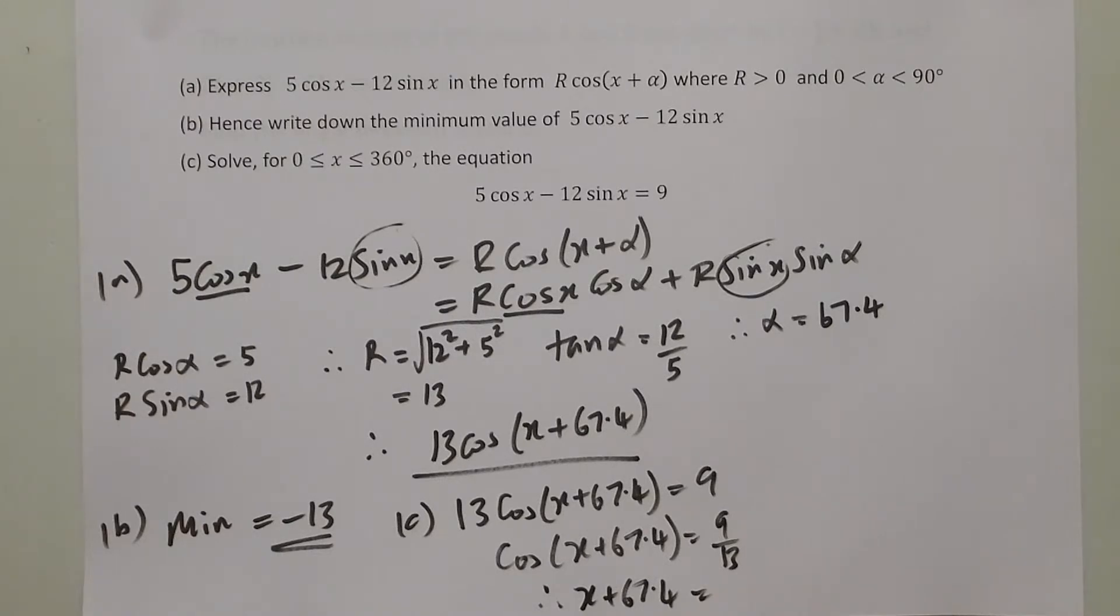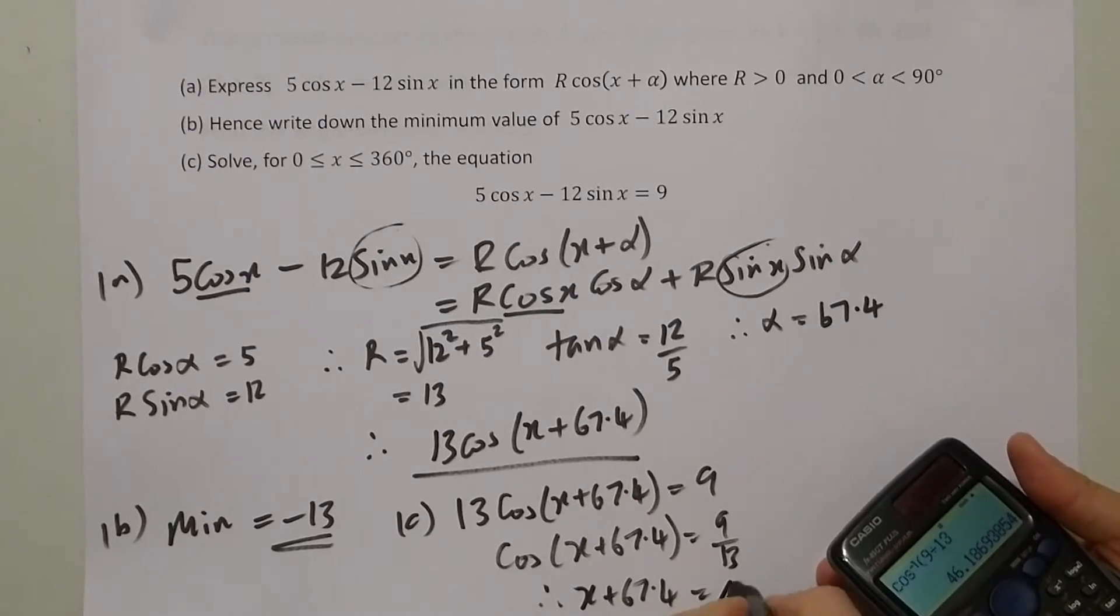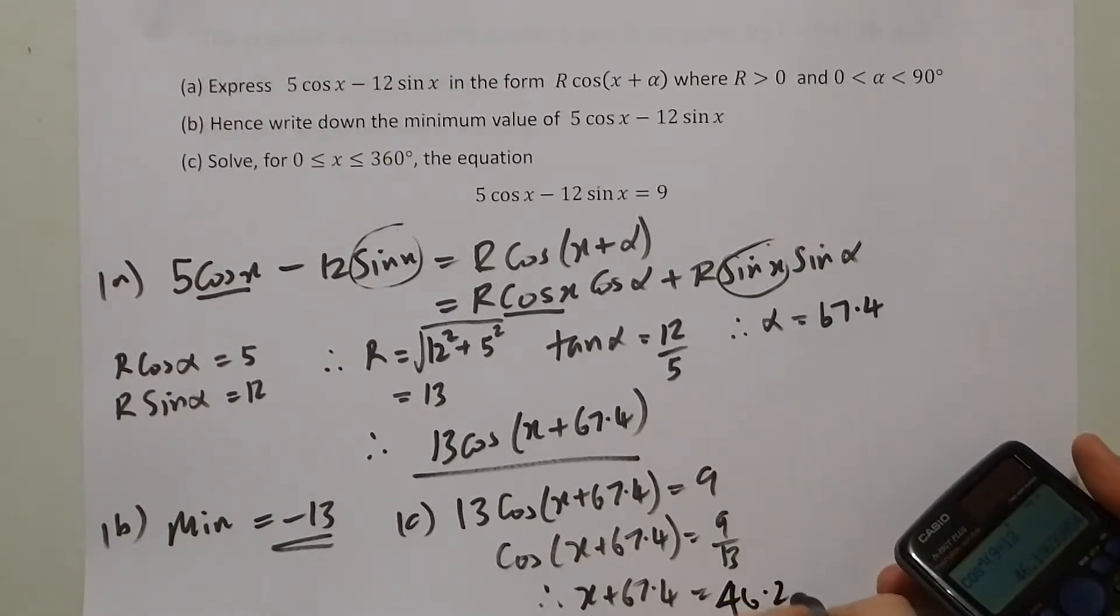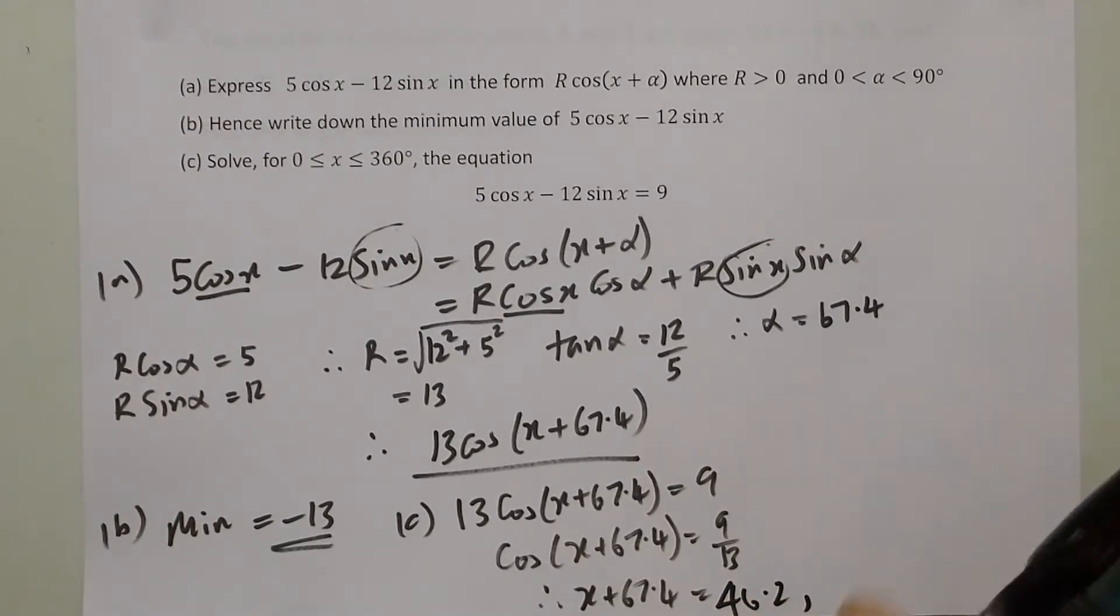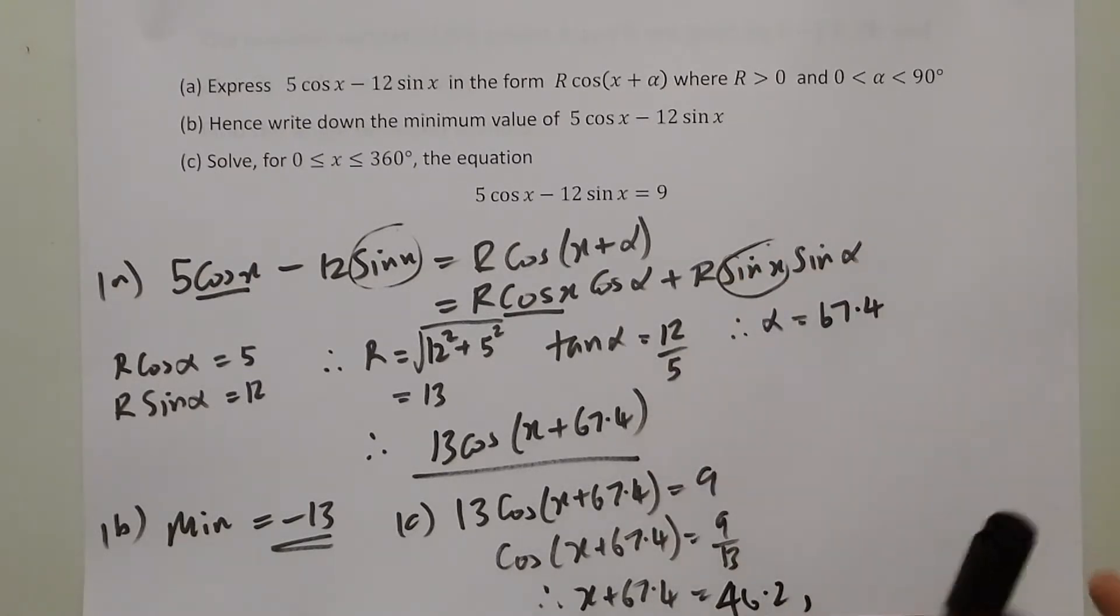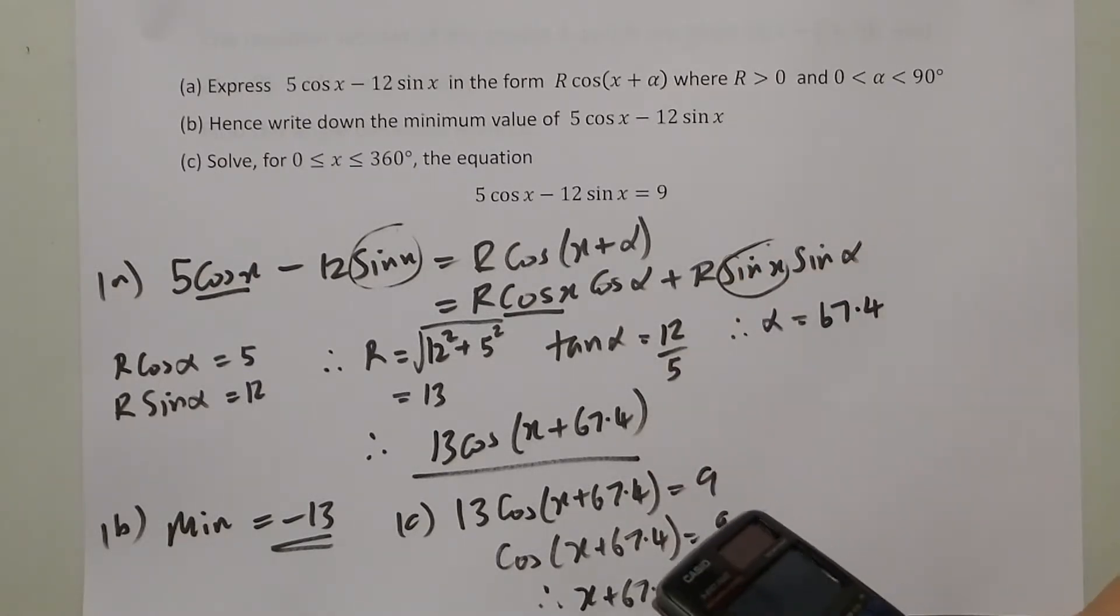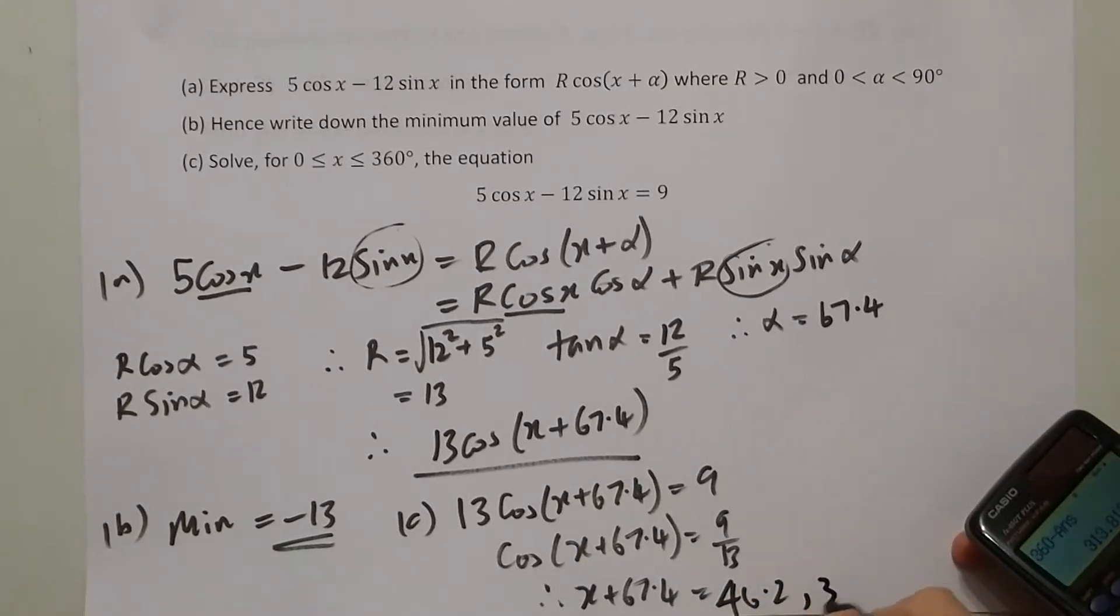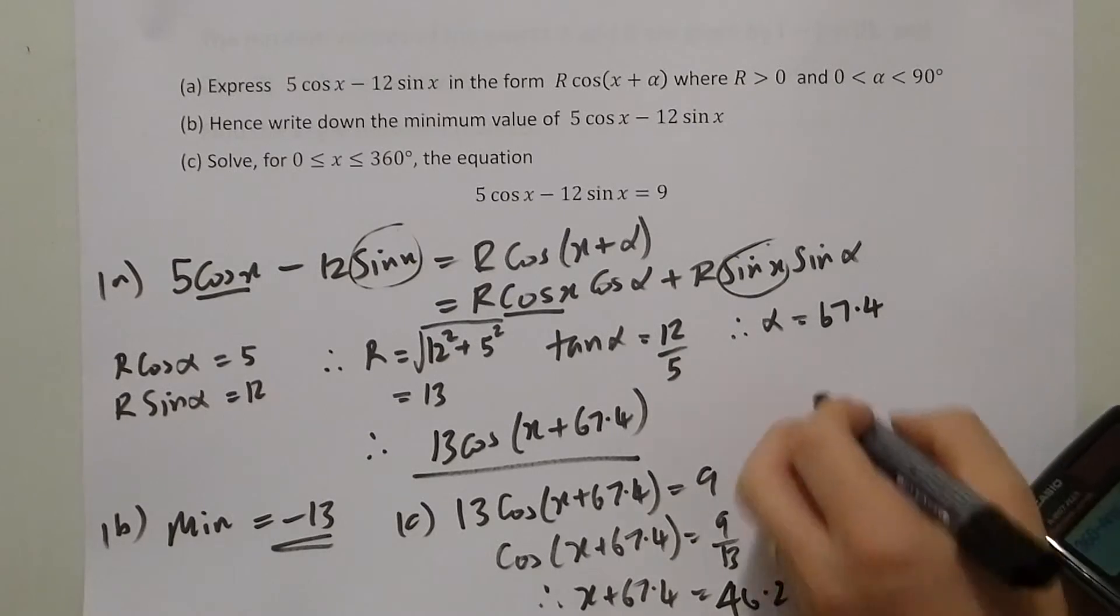But also, from a cos diagram, we have another one in the other quadrant, which is 360 degrees minus that, which gives us 313.8.